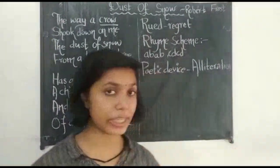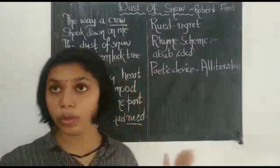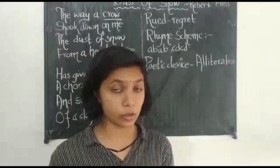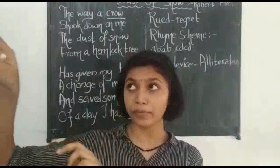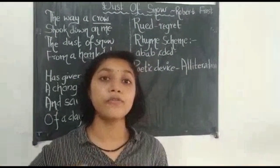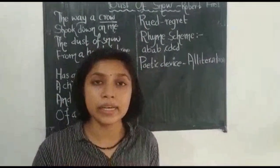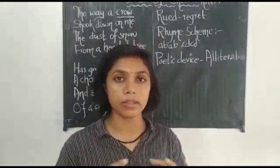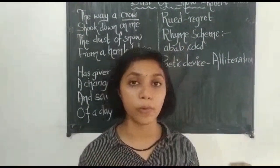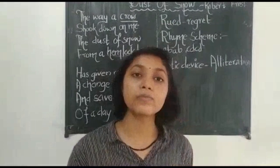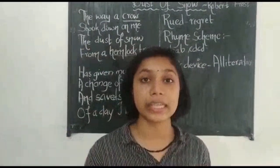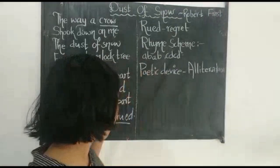Now let's see it all together. A crow was sitting on top of a hemlock tree and the poet was standing near to it. By the movement of the crow, the snowflakes fell on the body of the poet and the poet felt some kind of happiness. He was stressed out or sad initially, but as soon as the snowflakes fell on him, his mood changed. He became happy and the crow saved his day. That's what this poem means.